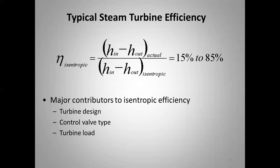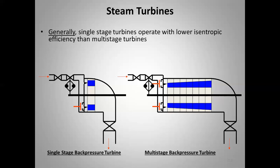The major contributors to isentropic efficiency are turbine design, control valve type, and turbine load. Larger multi-stage backpressure turbines have better efficiency. A small pressure drop or relatively small steam flow rate reduces the number of stages to one or two at most, hurting efficiency. Larger pressure drops and higher steam flows lead to multi-stage backpressure turbines with better isentropic efficiencies.